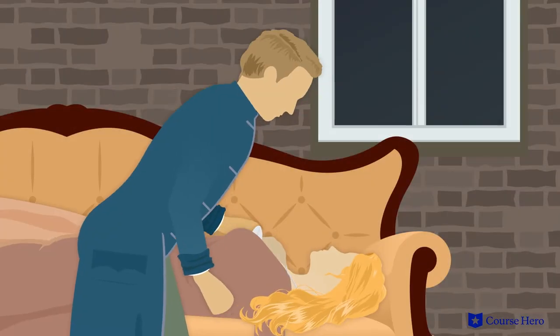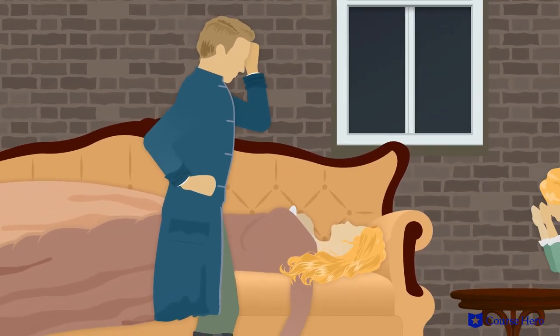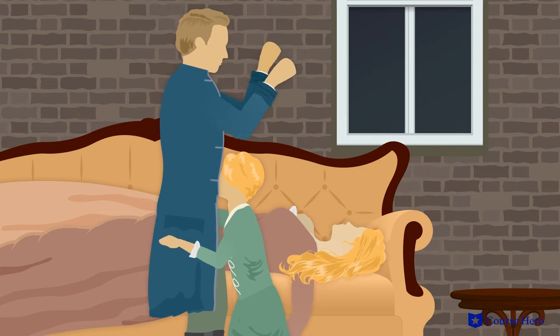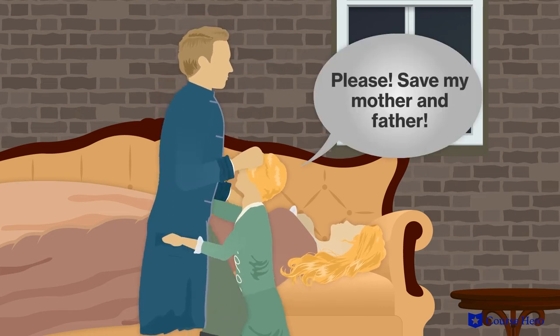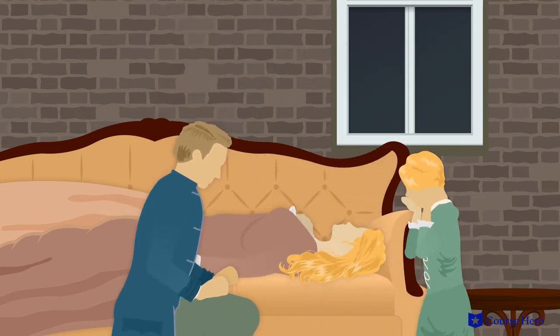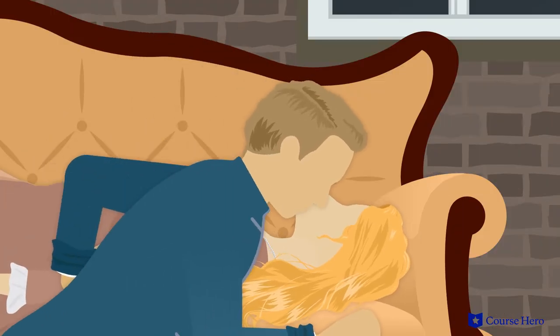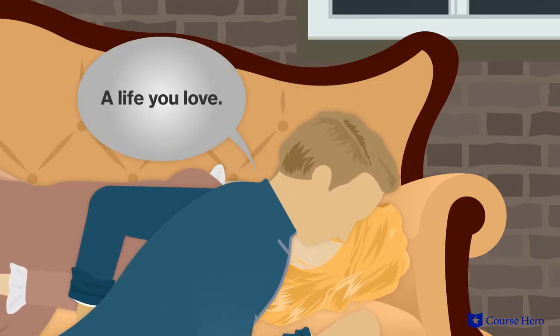Sidney Carton carries her to a coach and lays her on the seat. When they get home, Carton lowers Lucy to a couch to be taken care of by Miss Pross. Little Lucy throws herself at Carton to embrace him, begging him to save her mother and father. Carton gives her mother a kiss with her permission and whispers to her, a life you love.